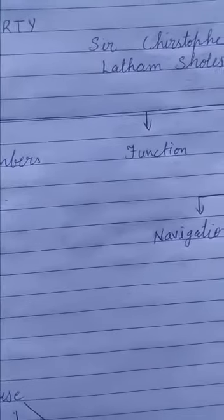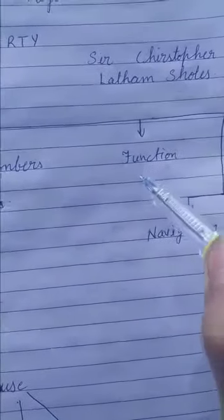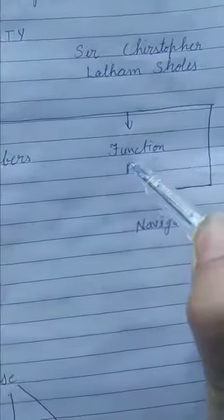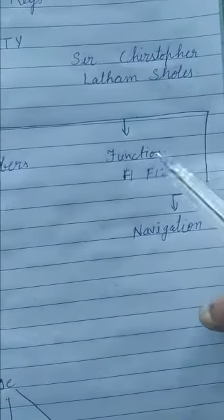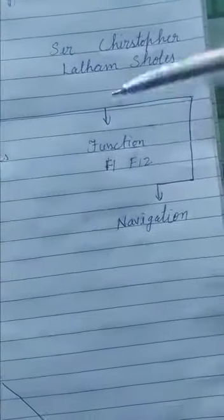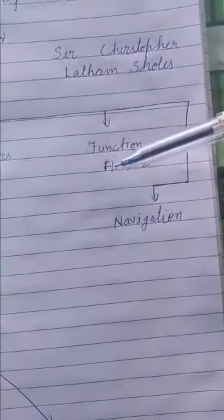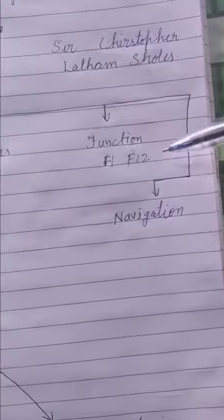Then function keys are what? Function keys means the keys at the top most. You have seen F1 to F12. The top most row is the function key. Where the keys are from F1 to F12.